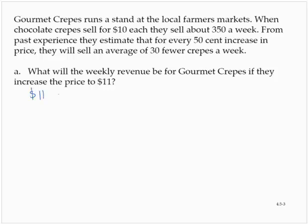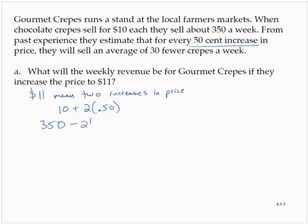So $11 means that there were two increases in price, because for every $0.50 increase: 10 plus 2 times 0.50 equals $11. So we have two increases, and for each increase they will sell an average of 30 fewer crepes. So we would have 350 minus two thirties.